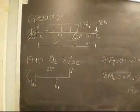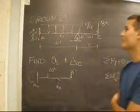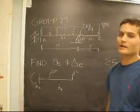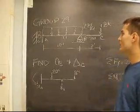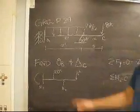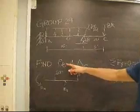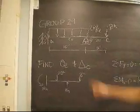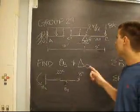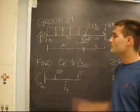We are group 29 and we are solving this beam, finding the slope at B and the deflection at C.